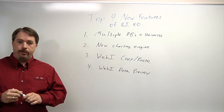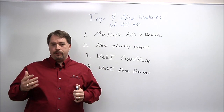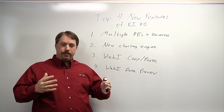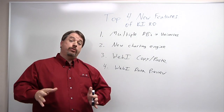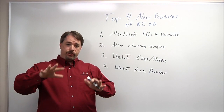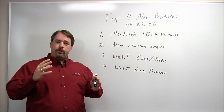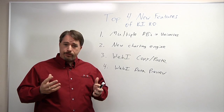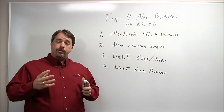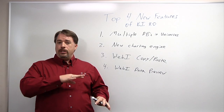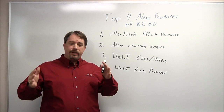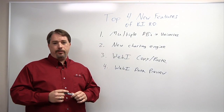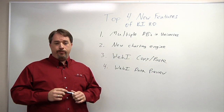Number four is Webby data preview. Previously when developing Web Intelligence reports, if you wanted to see the data or manipulate it to figure out what kind of data is there, you'd actually have to create another tab at the bottom of the report just to display all the data objects. Now as you're creating the query, you can preview the data — see what information is in a particular field if you're not as familiar with the universe. Once you're in the report, you can preview the data, sort it, filter it, and explore the data itself to make sure you've got the elements you want before placing them on the report and spending time refreshing.